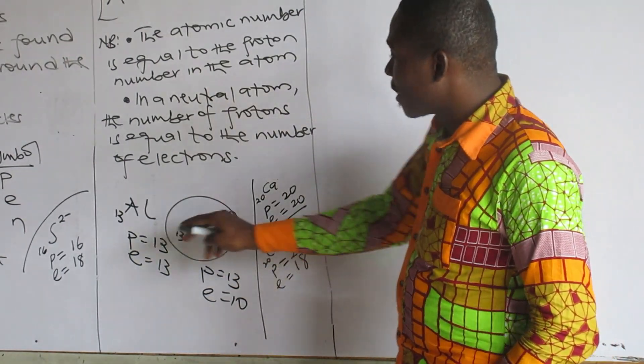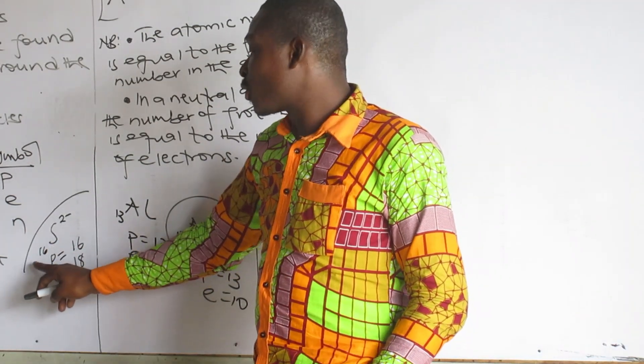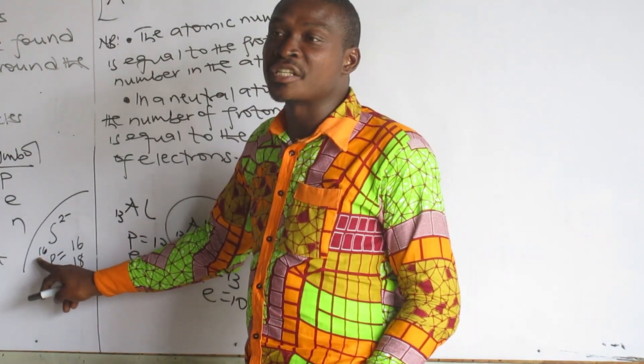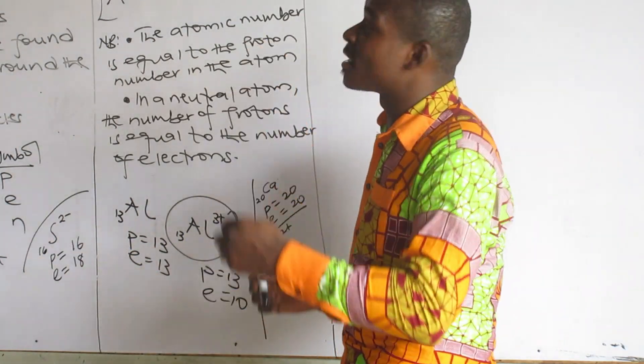So sulfur 2 minus, an ion, the proton number is still 16, atomic number doesn't change. It gained 2 more, so the electrons are 18. Now let's look at the definitions.